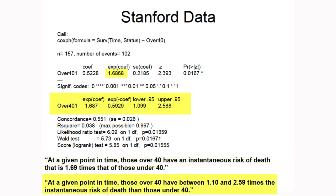Interpreting the confidence interval for the hazard ratio: at a given point in time, the hazard of death for those over 40 is between 1.1 and 2.59 times the hazard of death for those under 40. Based on this simple model, we have evidence to suggest that people over 40 have a greater risk of death — the p-value is less than 0.05 and the confidence interval for the hazard ratio does not include 1. We can estimate that at a given instant in time, someone over 40 is 69% more likely to die than someone under 40, ignoring all other variables.